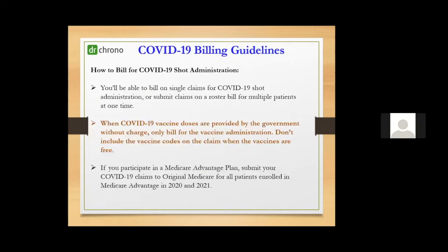How do you bill for COVID-19 vaccine administration? You can bill each patient on individual claims, or send them out as a roster bill for multiple patients — but only if no other service is provided beyond the vaccine administration. Also, when COVID vaccine doses are provided by the government without charge, bill only the vaccine administration code. The vaccine code does not need to be on the claim, though some practices include it at a zero-dollar charge for reporting purposes, which is allowed. Third, if patients are enrolled in a Medicare Advantage plan, submit COVID-19 claims to original Medicare for all patients enrolled in 2020 and 2021.